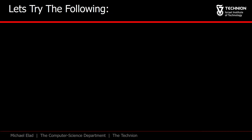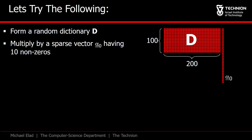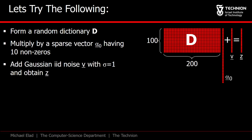And now, let's experiment with it. We start by creating a random dictionary of size 100 by 200. We multiply it by a sparse vector alpha zero of cardinality 10, add noise, and get the signal z.